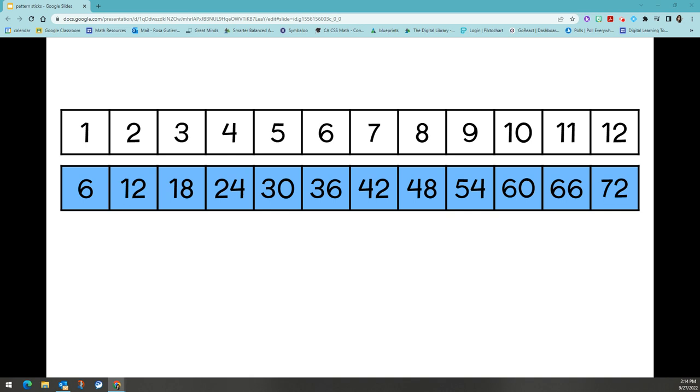Pattern sticks are an excellent way for students to practice their multiplication tables. Let's take the six multiplication as an example. Students can take their ones pattern stick and their six pattern stick and line them up as seen on the screen. This allows students to see the connection between skip counting and multiplication. I can see that 6 times 4 equals 24 because the one pattern stick has a 4 over the 24 on the 6 pattern stick.